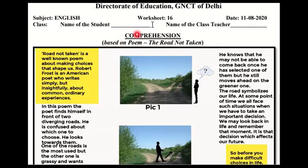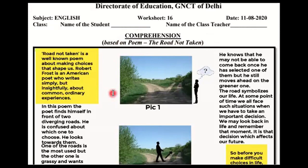This worksheet is a comprehension-based worksheet. This is your poem — 'The Road Not Taken' by Robert Frost. It is a very famous, classic poem. I think when I was in school, I also studied it.